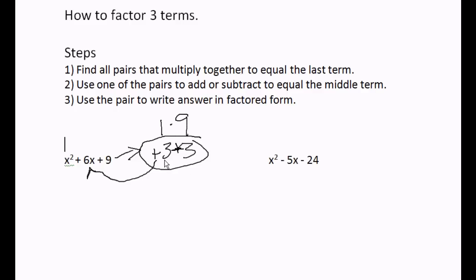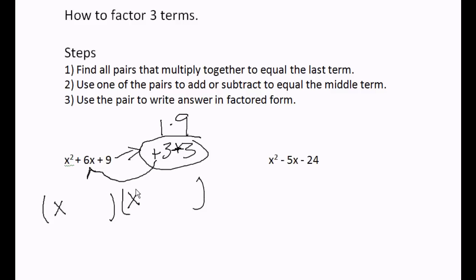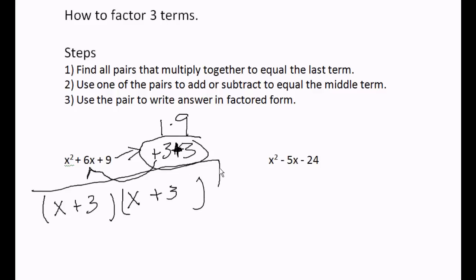Step three: use this pair that you created to put your answer in factored form. You're always going to have two big parentheses. Since the first term is x², you're always going to have an x and an x in the first spots of each parenthesis. Then use your pair with the signs — a plus three and a plus three.